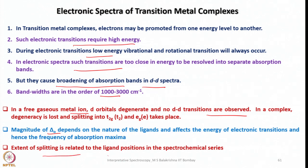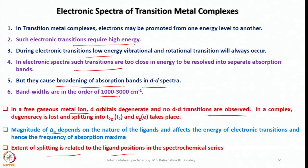The spectrochemical series ranks ligands by their donor and acceptor properties. Weak-field ligands produce a smaller HOMO–LUMO gap (smaller Δ) requiring less energy for electron excitation. The extent of splitting is related to the ligand's position in the spectrochemical series, whether ranked by increasing or decreasing crystal field stabilization energy. More information about the electronic spectra of transition metal complexes will be covered in the next lecture — until then, have an excellent time.